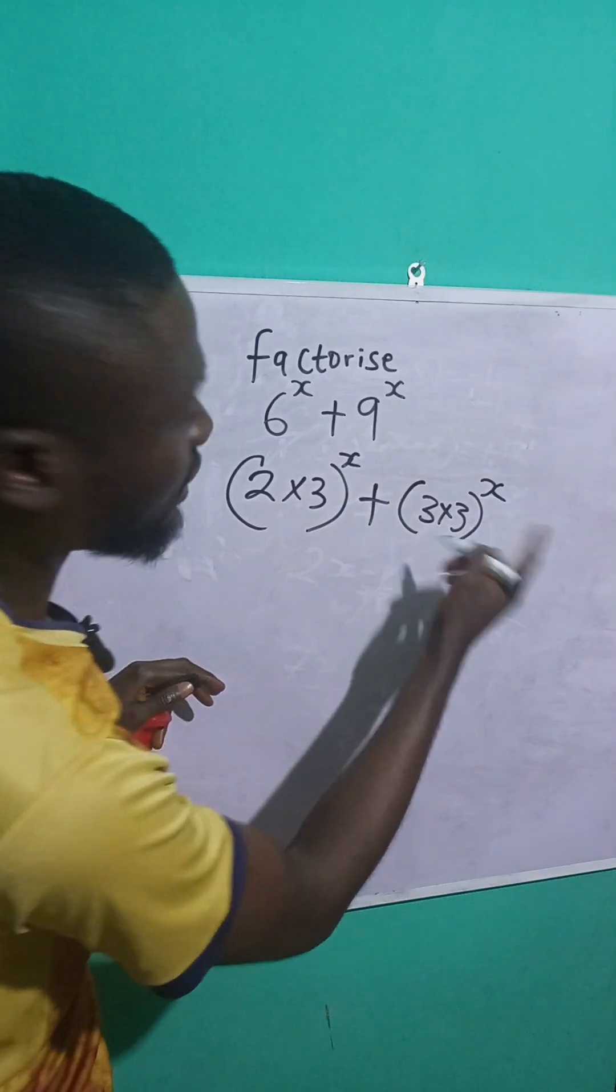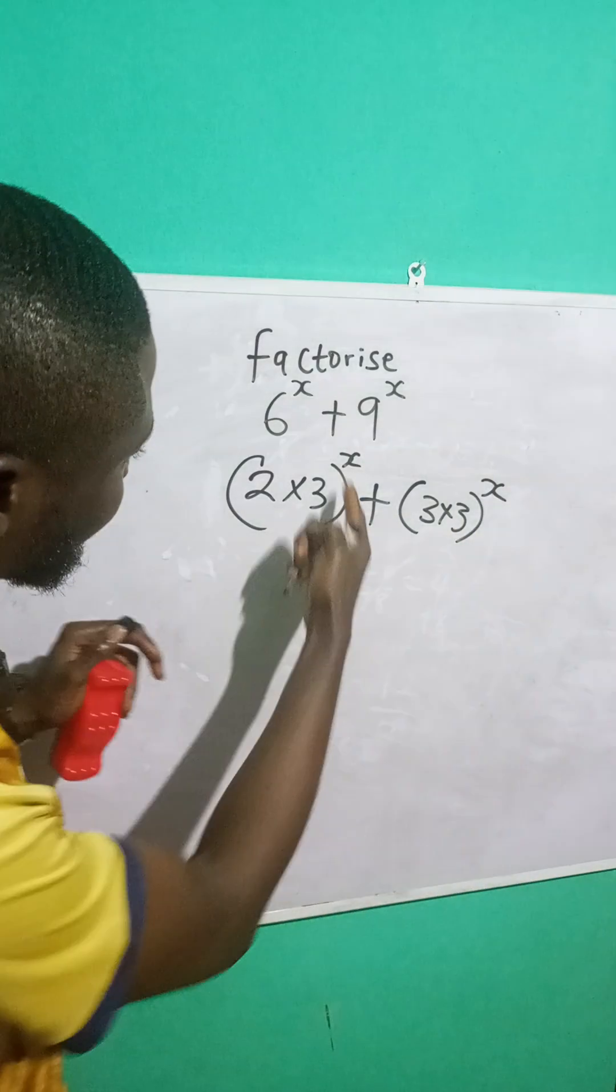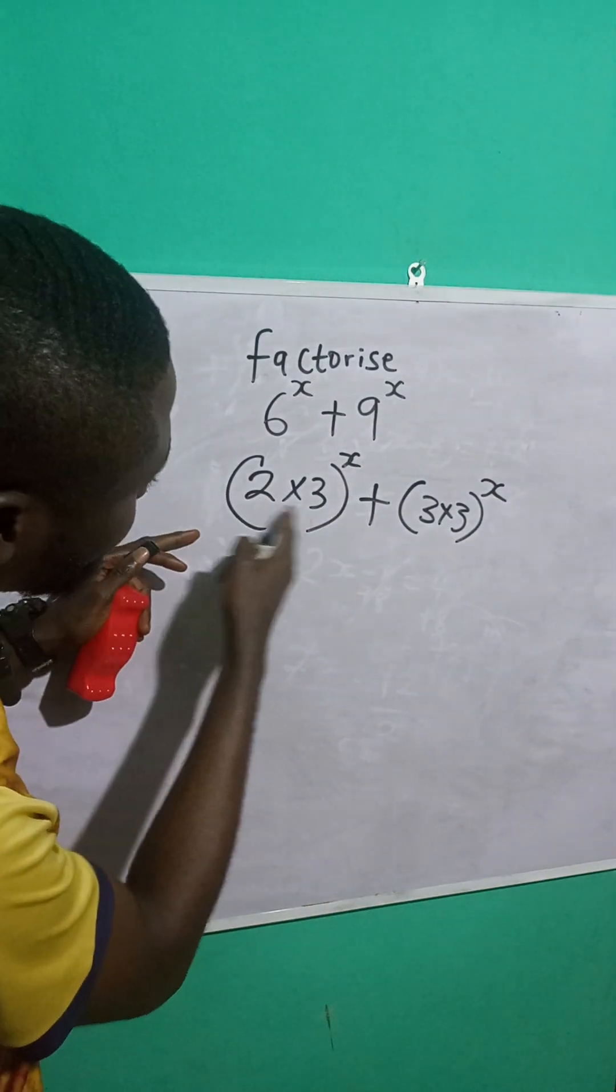And we have an exponent of what? x, right? Now, do you know that this x can be distributed to these 2 and 3?